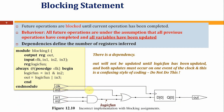With blocking statements, on the positive edge of clock, in1 AND in2 are computed and logic_fun is updated first, and then the final output is computed using the updated logic_fun value. So when you saw the earlier circuit with non-blocking, there was a register; but with blocking statements, since logic_fun is updated before out is computed — all within a single clock edge — no register is needed for logic_fun.